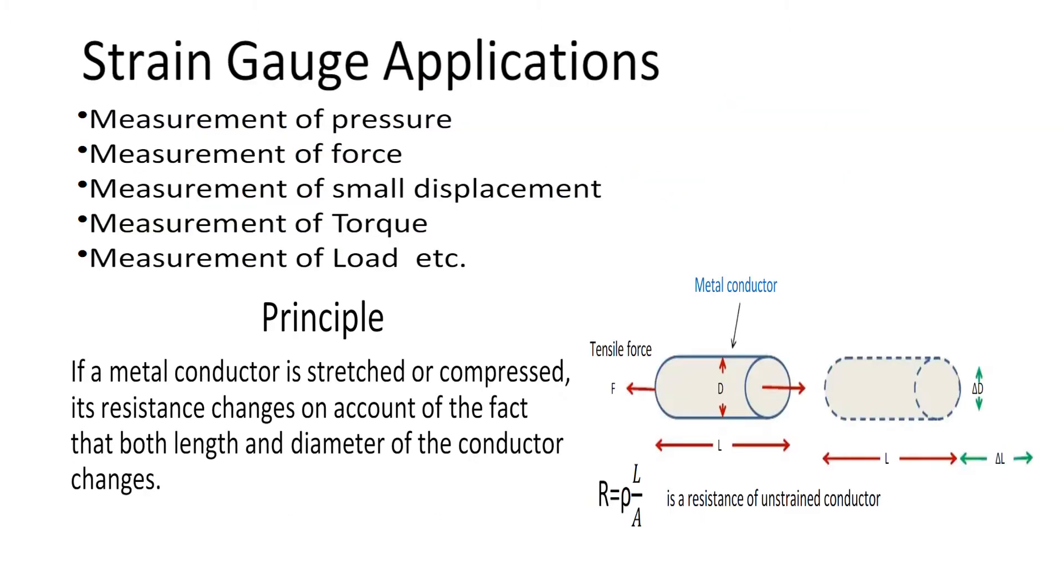Strain gauge applications: strain gauge is used in measurement of pressure, measurement of force, measurement of small displacement, measurement of torque, measurement of load, etc. The principle of strain gauge: if a metallic conductor is stretched or compressed, its resistance changes on account of the fact that both length and diameter of the conductor changes.